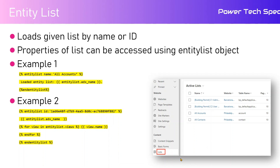Once you load it, it will display the content of that specific list. In example one you can see that the entity list name is 'All Accounts' — it will load the entity list and you can refer to it using the adx_name property. In example two you can use ID and then query the list. You can also use the view object — entity list dot views — and iterate through the views for that specific entity.